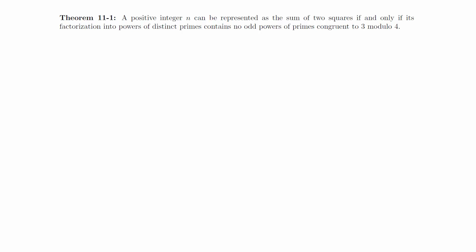Theorem: A positive integer n can be represented as the sum of two squares if and only if its factorization into powers of distinct primes contains no odd powers of primes congruent to 3 modulo 4.